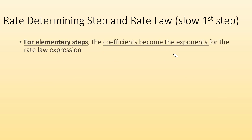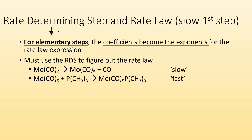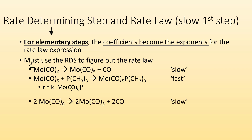Rate determining steps and rate laws — slow first step example. For elementary steps, the coefficients become the exponents for the rate law expression. I've underlined this because it is only for elementary steps, not for the overall reaction. If you're given an elementary step, then the coefficients become the exponents for the rate law expression, and you use the rate determining step to figure out the rate law. So if my mechanism is a two-step process, I use that first slow step to figure out the rate law expression. Rate equals K times the reactant — here it had a coefficient of one, so that reactant to the first power. If I had different coefficients, then my rate law would be different as well.